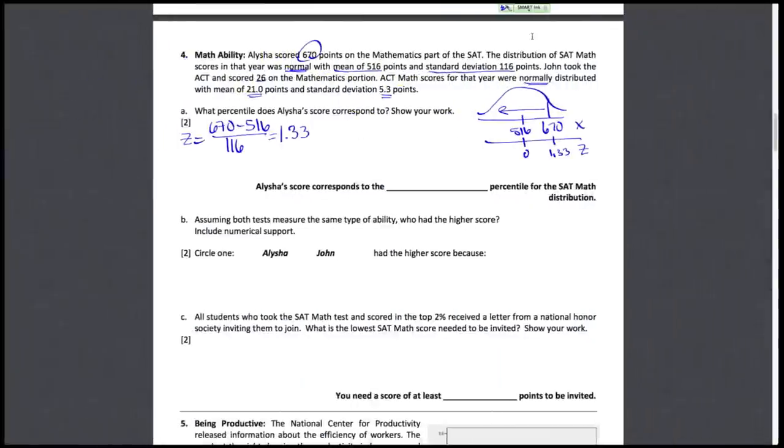So her score corresponds to which percentile? The area to the left is 0.9082, but the percentile then would be around the 90th, the 90.82 percentile. The 90th or the 91st percentile would be fine here, but making sure we don't put on that line just the value of 0.0982, because that isn't what percentile that corresponds to. It's about the 90th, almost 91st percentile.